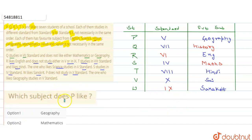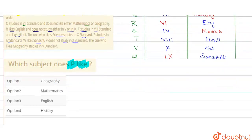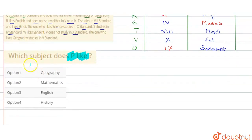So the question is: which subject does P like? P को कौन सा subject पसंद है? P 5th standard में है और P को Geography पसंद है. That means option 1 will be the right answer — P likes Geography. Thank you.